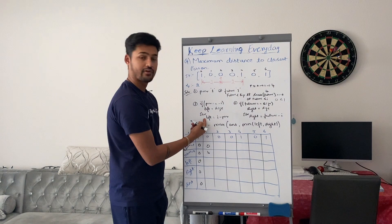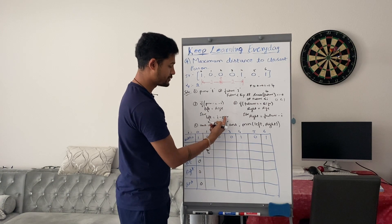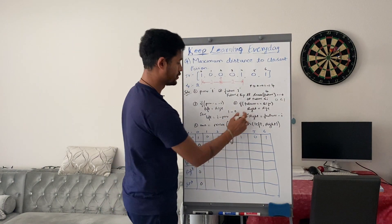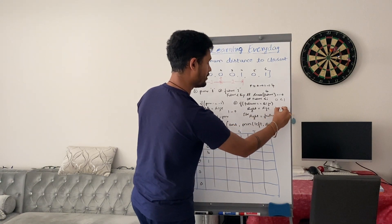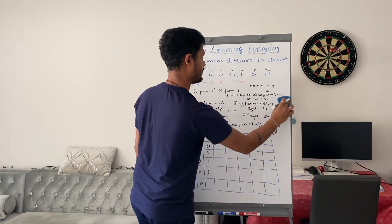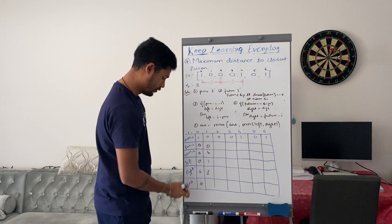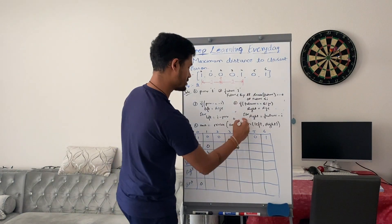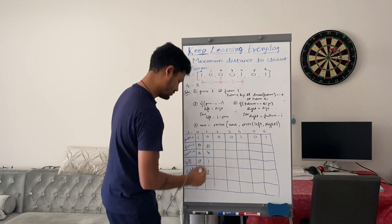Now let us figure out what are the values of left and right. Previous is not equal to minus 1, so left is equal to i minus previous: i is 1 minus previous is 0, so our left is 1. Future is not equal to size, so right is equal to future minus i: future is 4 minus i is 1, so our right is 3. Answer is the maximum of answer and the minimum of left and right. Minimum of 1 and 3 is 1, so our answer will be 1.